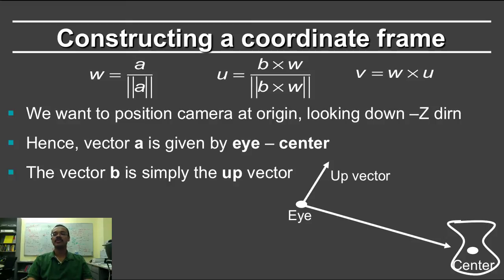Now how do you determine a and b? Well the vector a is simply given by eye minus center. At least following the OpenGL convention, where the camera looks down the minus z axis and it's at the origin. The vector b is simply the up vector. So given eye and center, we can find a vector a, find a vector b, and then apply this coordinate frame to find u, v and w from a and b.